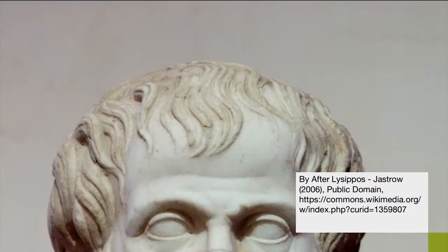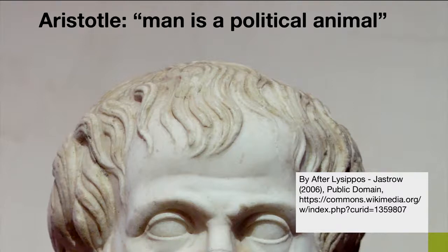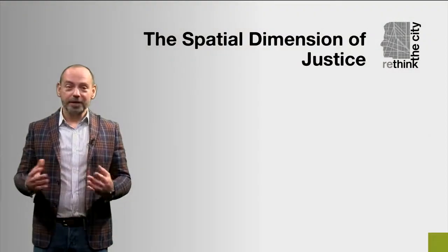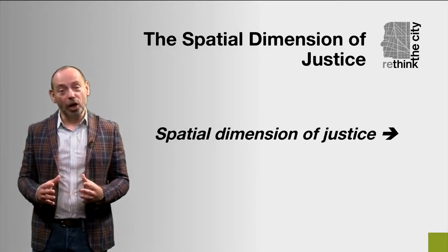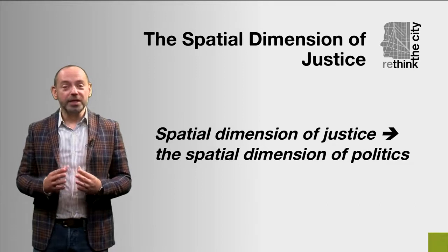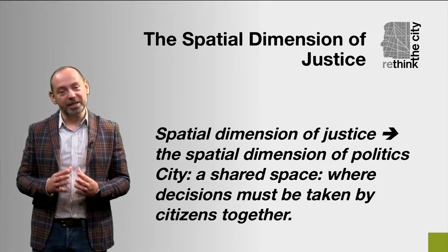An astute observer of his own society, Aristotle, another Greek philosopher, concluded that man is a political animal. We can only achieve the good life by living as citizens in organized societies, and in doing so we become fully human, as opposed to animals in a state of nature. For Plato, on the other hand, the city is synonymous with society. It is in the city that men and women come together to decide how they are going to achieve life together. This tells us that a spatial dimension of justice is closely related to the spatial dimension of politics itself, which implies the city as a shared space where decisions must be taken by citizens together.